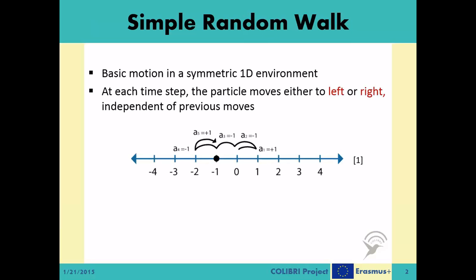As the name suggests, it is a fairly simple motion, which is defined in a symmetrical, one-dimensional environment. At each time step, the moving object moves one step to the right or one step to the left. This direction choice is probabilistic, with 50% chance of moving to the left and 50% chance of moving to the right. The movement at each step is independent of the previous steps.